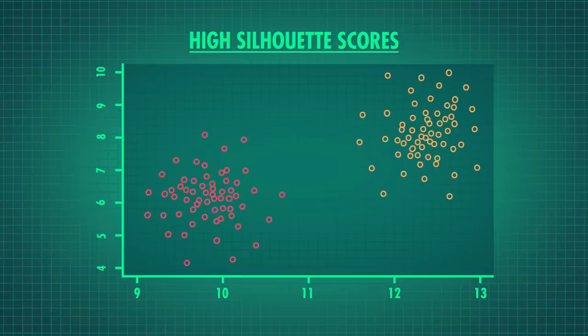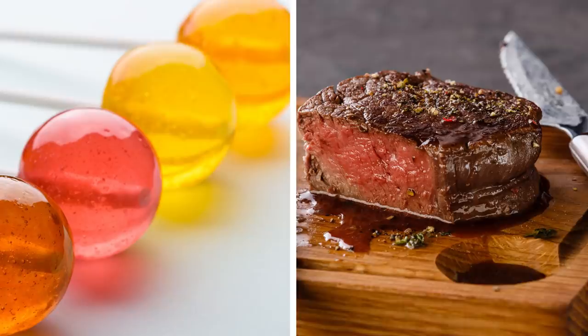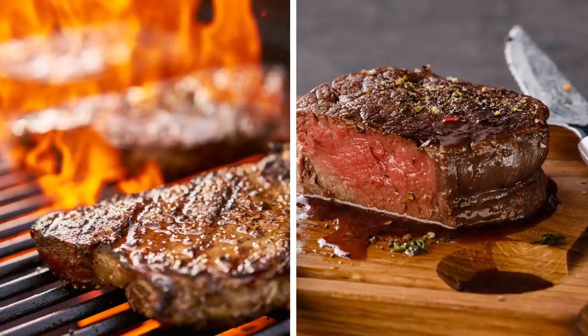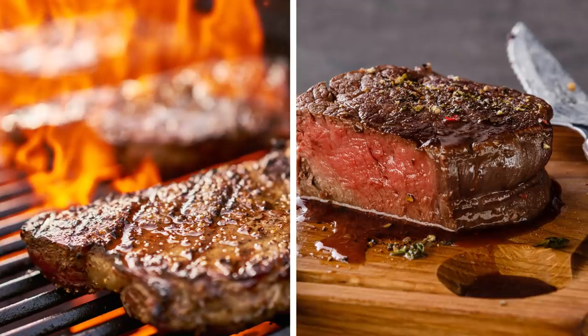And here's an example of clusters that have low silhouette scores. In an ideal world, we prefer high silhouette scores because that means there are clear differences between the groups. For example, if you clustered data from lollipops and filet mignon based on sugar, fat, and protein, the two groups would be very far apart with very little overlap, leading to high silhouette scores. But if you clustered data from filet mignon and a New York strip steak, the data would probably have lower silhouette scores because the two groups would be closer together with more overlap.